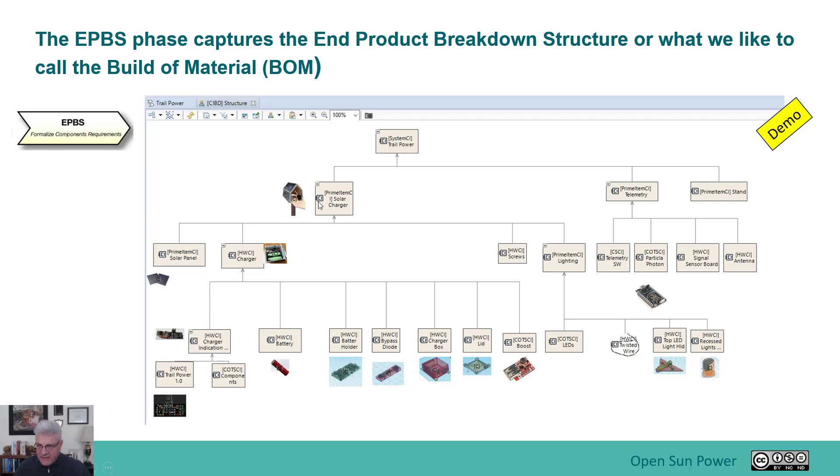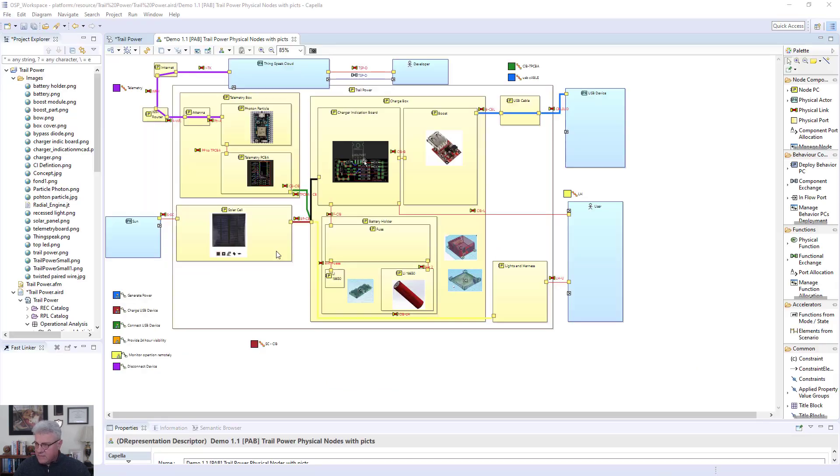The telemetry system has different pieces—there's a Photon Particle that's part of it, the telemetry software, and the telemetry hardware actually comes with a circuit board that includes a signal sensor board and an antenna. Those are all part of this telemetry system. Finally, the last thing is the stand that the solar charger is on, the prime item stand. Going live, let's go into the software and take a look at that.